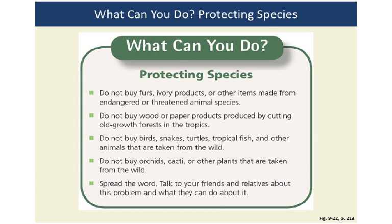What can you do to protect species? Do not buy furs, ivory products, or other items made from endangered or threatened animals. Do not buy wood or paper products produced by cutting old-growth forests in the tropics. Do not buy birds, snakes, turtles, tropical fish, or other animals taken from the wild. Do not buy orchids, cacti, or other plants taken from the wild. Spread the word — talk to your friends and relatives about this problem and what they can do.